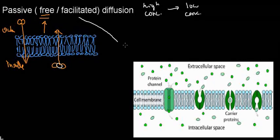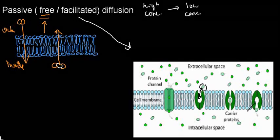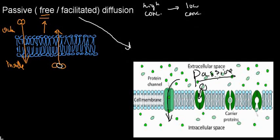We also have a concept called facilitated diffusion. If I have a molecule that is either charged, larger, or has some sort of dipole moment and can't diffuse freely on its own, I can have carrier proteins. A carrier protein binds to the charged species outside the membrane, houses it, undergoes a conformational change, and releases it to the intracellular space — still from high to low concentration, so still passive. We also have channel-forming proteins that open a door for these molecules to pass through. This is facilitated diffusion — also passive.